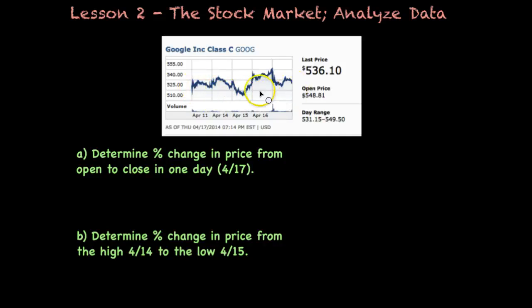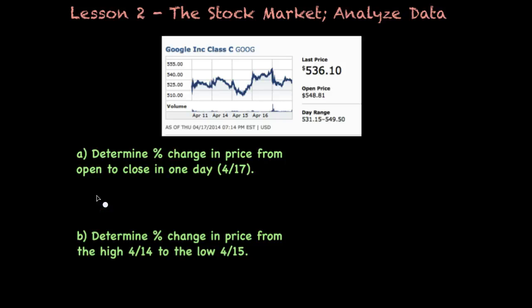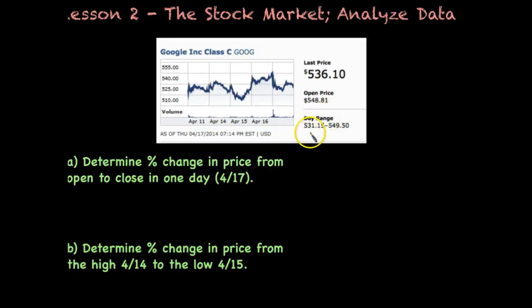This is really only about a six-day span from start to finish, and notice that we end and start around the same price, so there's not much change overall. But let's go ahead and determine the percent change in price from open to close in just one day — April 17th. Looking at the chart, we have an open price of $548, and a day range of $531 to $549. Our closing price — the last price of the day — is $536.